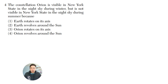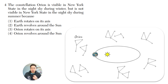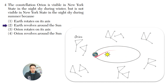Question four: the constellation Orion is visible in New York State in the night sky during winter, but not visible during summer. Why? Because the Earth revolves around the sun. As Earth orbits around the sun, it will see different constellations. During the winter months, it will see Orion, but as it orbits to the other side, it will see different constellations. Constellations are groups of stars, and because Earth doesn't stay in one position, we see different ones. The answer is going to be two — the Earth revolves around the sun.